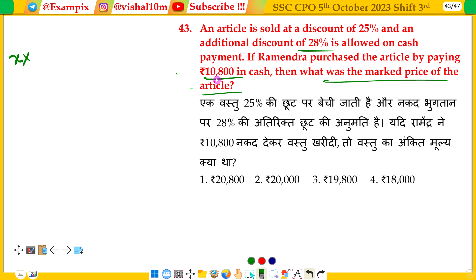The article is sold at 25% discount. The fraction value of 25% is equal to 4.